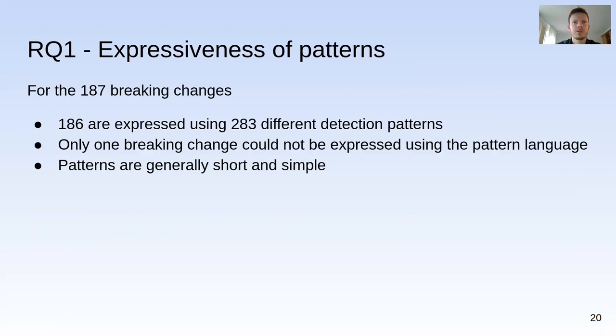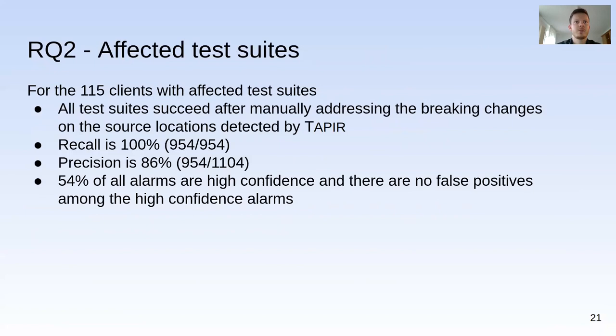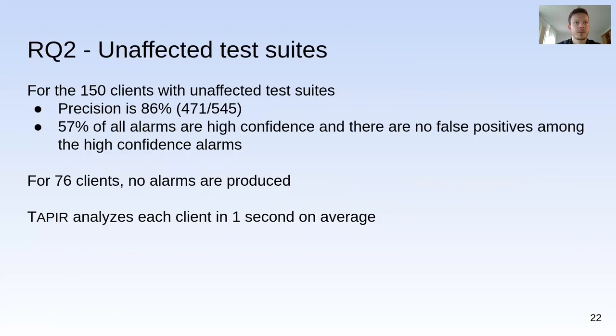For the affected test suite experiment, Tapir produced an alarm for every source location where manual adjustments were necessary — the recall was therefore 100%. Precision was 86%, meaning only 14% of produced alarms were false positives. More than half of all alarms were marked as high confidence, and all high confidence alarms are true positives. Therefore, users of Tapir need only consider alarms marked as low confidence when filtering false positives.